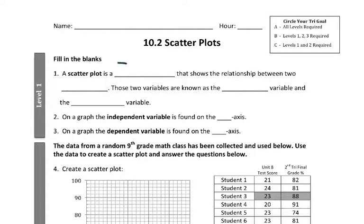A scatter plot is a graph that shows the relationship between two variables. Those two variables are known as the dependent variable and the independent variable.